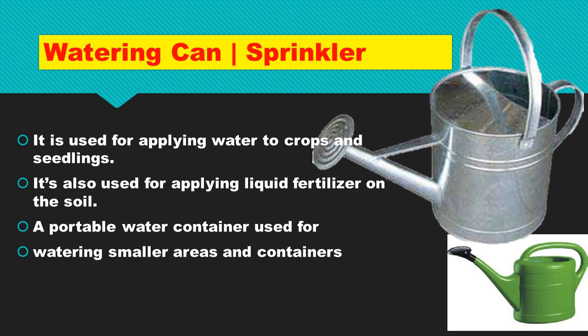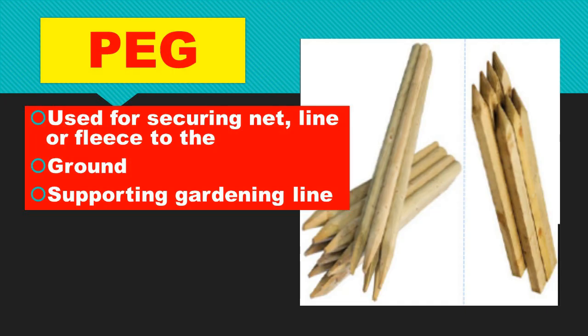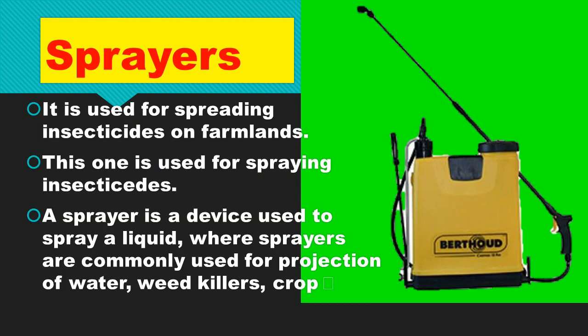It is also used for watering small areas and containers. Next, let's look at the peg. A peg is a piece of wood used when you want to level the ground, put lines, or make furrows and the seedbed. It is used for securing net lines to the ground and supporting the gardening line.